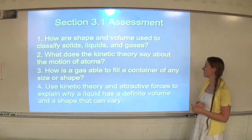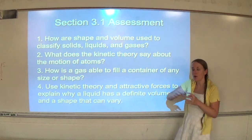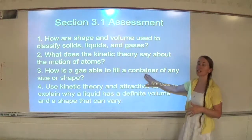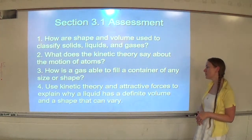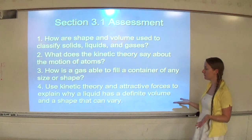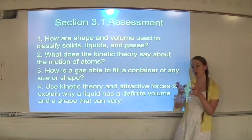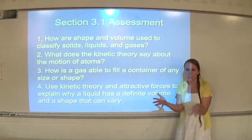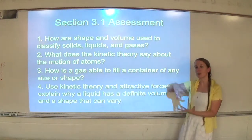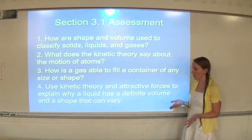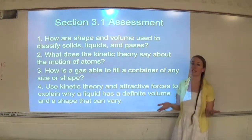Number three, how is a gas able to fill a container of any size or shape? The particles are spread out. If you put it in a new container, the particles can just spread out even more because the attractions are very low between the gas particles. Number four, use the kinetic theory and attractive forces to explain why a liquid has a definite volume and a shape that can vary. We know it can take the shape of its container and that's due to kinetic theory. The motion of the particles is enough to where they can move past one another. So they'll move past one another to take the shape of the container. However, because the particles are close together, the attractive forces don't allow it to expand like a gas. It's still going to take up the same amount of volume.